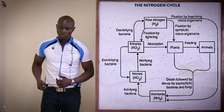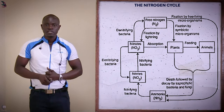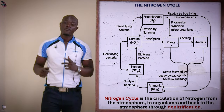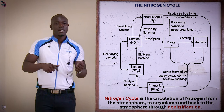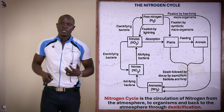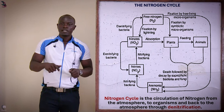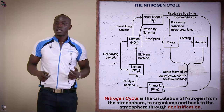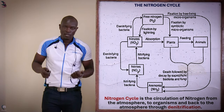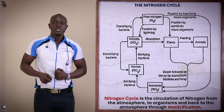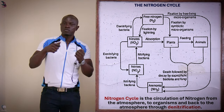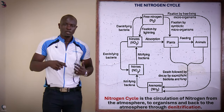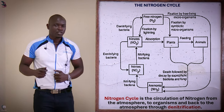Now let's look at the nitrogen cycle. As you can see in the diagram, we are cycling nitrogen from the atmosphere into the bodies of different organisms, and then from the bodies of different organisms the nitrogen is taken back into the atmosphere. The nitrogen cycle is defined as the circulation of nitrogen from the atmosphere, into the bodies of different organisms, and then back into the atmosphere.